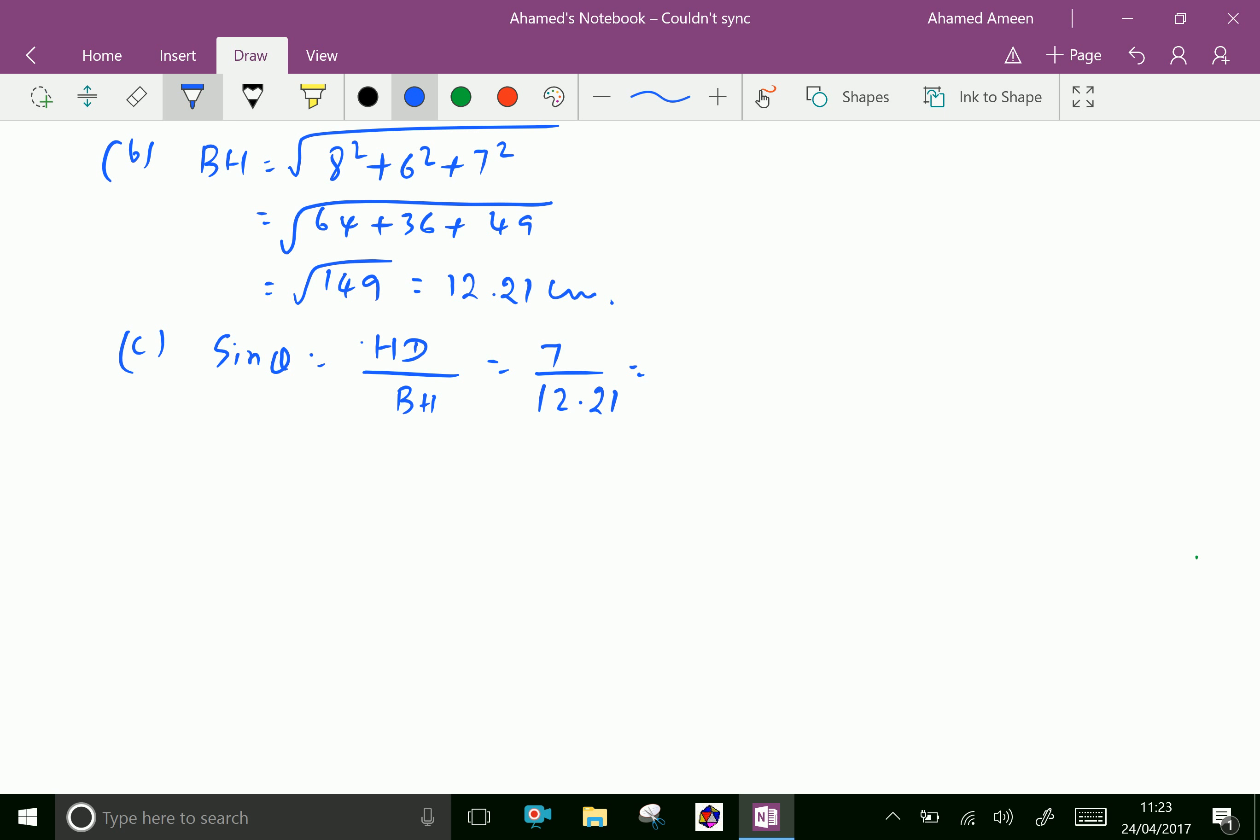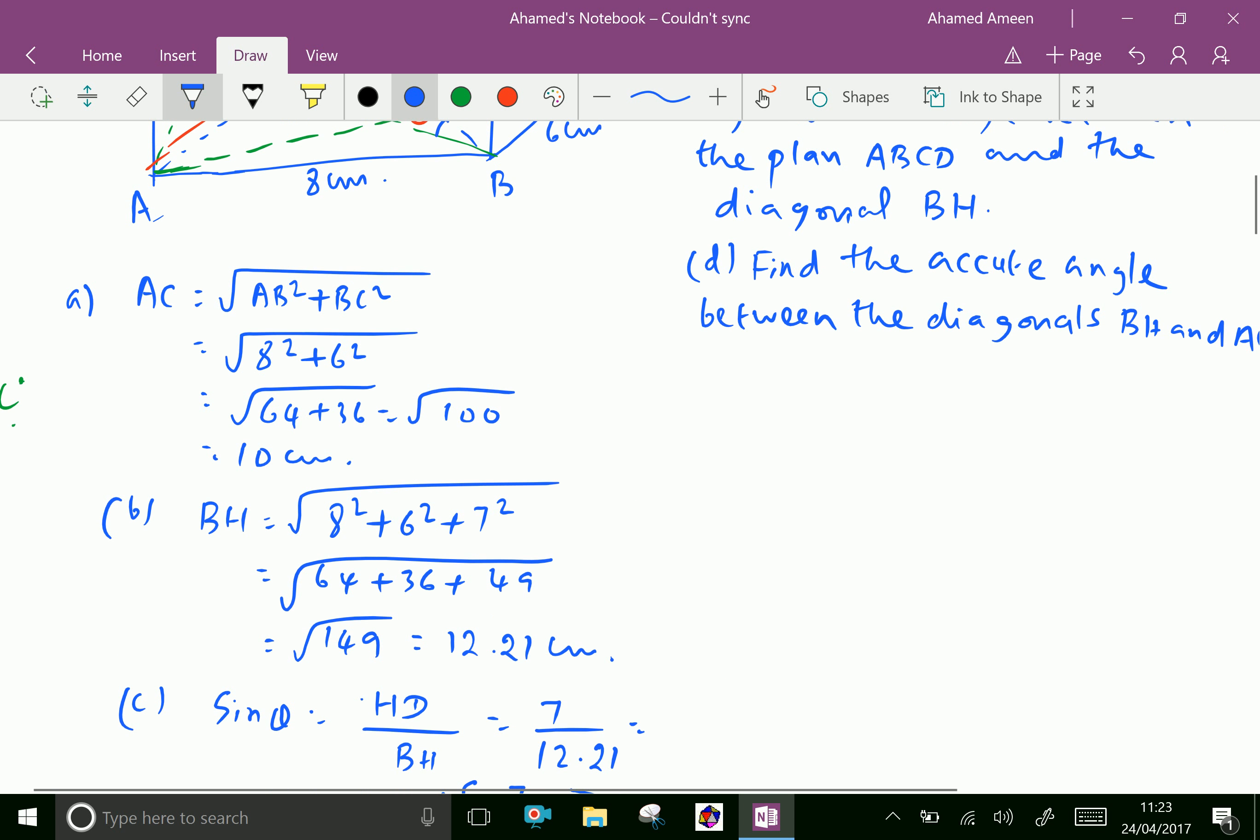Therefore theta equals sine inverse of 7 over 12.21, which gives 35 degrees approximately. Now next, part d: find the acute angle between the diagonals BH and AG.